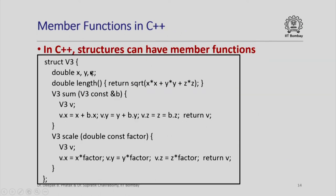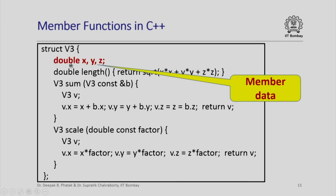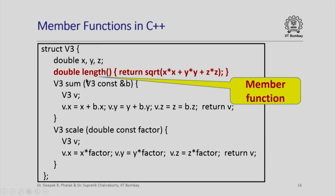In C++ there is actually a way to do this — C++ allows you to have member functions just like member data values in structures. Here is a new version of the structure V3. Of course we have the three member data elements x, y, and z, all of type double. We can also have a member function named length, and all it does is return the square root of x squared plus y squared plus z squared. Since this is a member function of the structure, when it refers to x, y, z it is referring to the member data of the same structure.